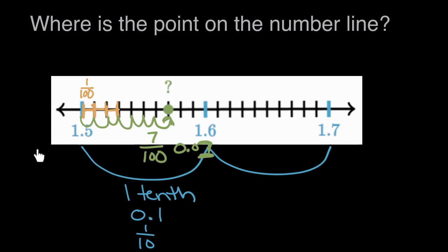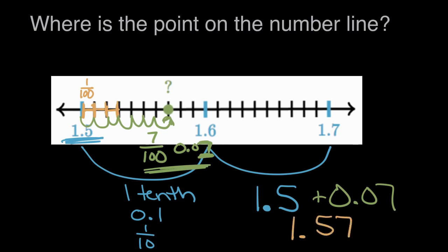So, looking at the whole number line now, putting the whole thing together, we started at 1.5, or 1 and 5 tenths, and we went another seven hundredths. So we can write that as plus seven hundredths. So we have 1 and 5 tenths plus seven more hundredths, which is a total of 1 and 57 hundredths.